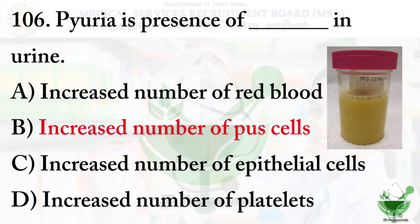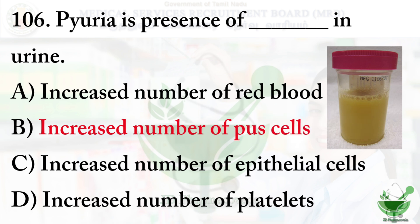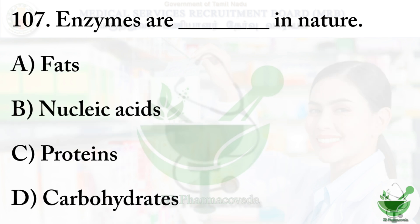Likewise, when RBC cells are present in urine it is called Hematuria, and if epithelial cells are present in urine it denotes urinary tract infection or kidney disease.